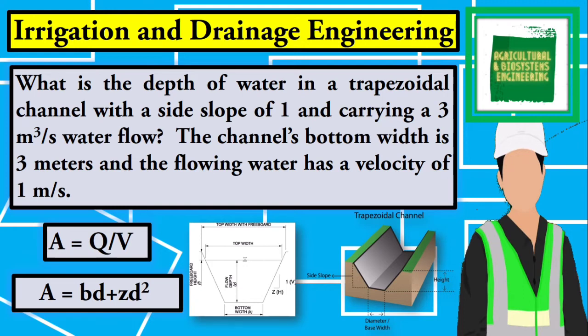What is the depth of water in a trapezoidal channel with a side slope of 1, and carrying a 3 cubic meters per second water flow? The channel's bottom width is 3 meters, and the flowing water has a velocity of 1 meter per second.